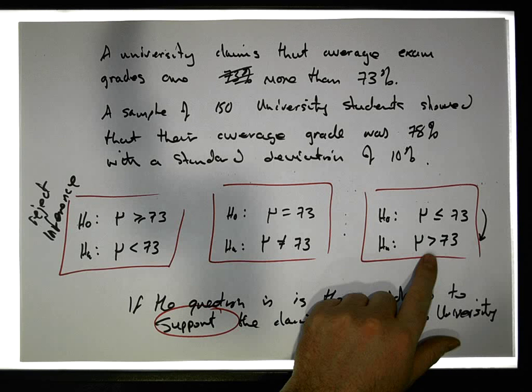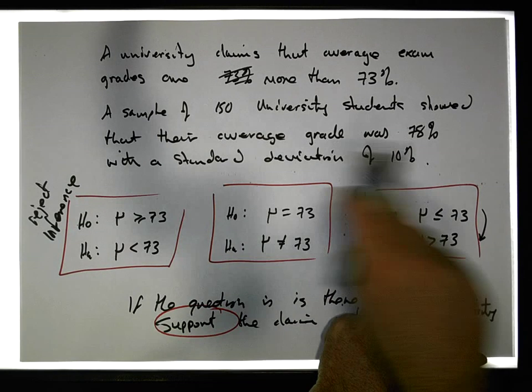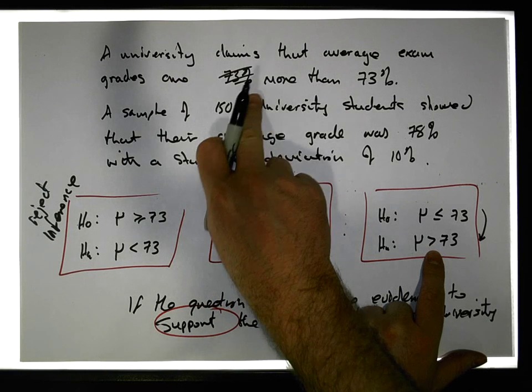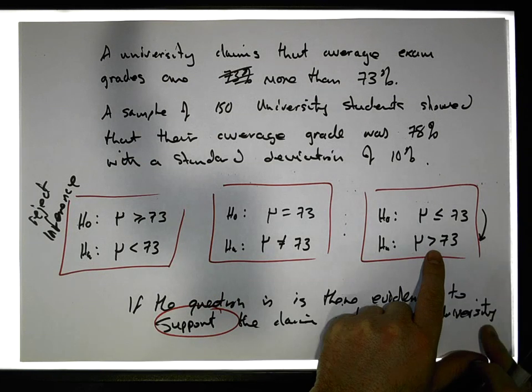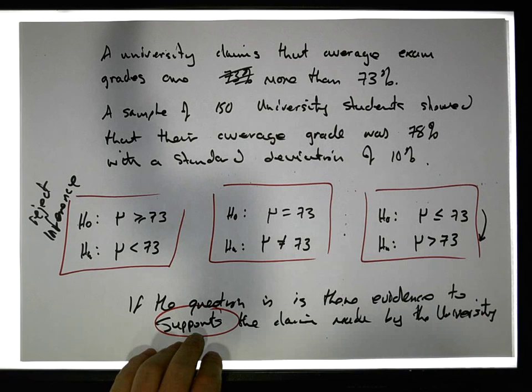So actually, this value here, this hypothesis here, is a hypothesis that would test the claim. It's testing to see whether the evidence supports the claim being made. That's one way to do it.